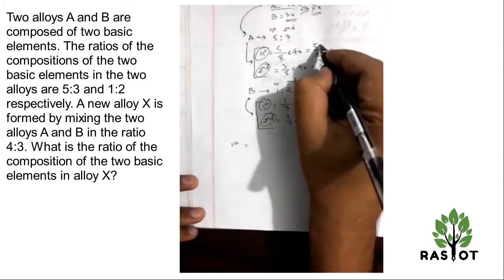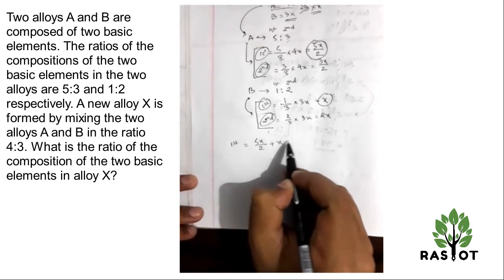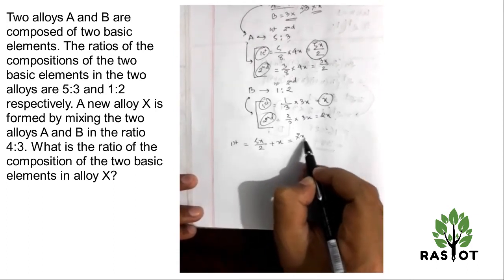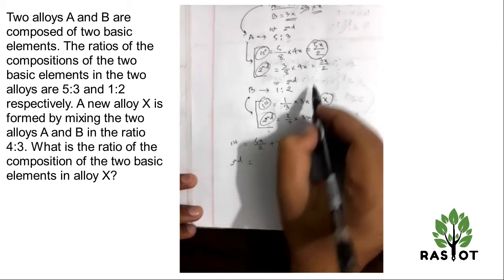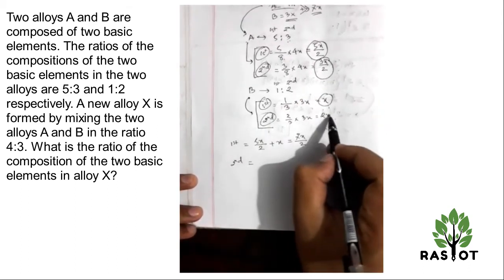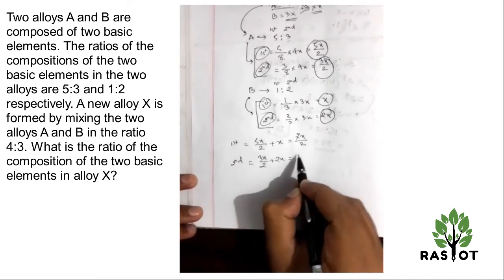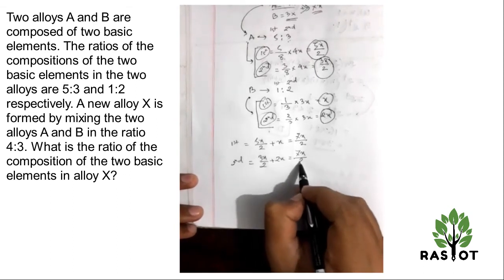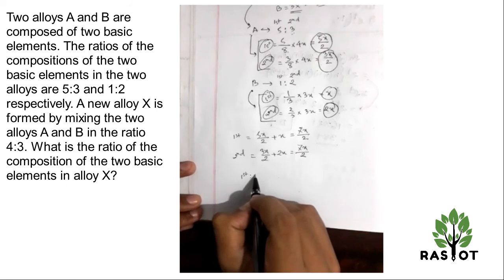So the first element total is 5X by 2 plus X, which gives me 7X by 2. The second element is 3X by 2 plus 2X, which also gives me 7X divided by 2. Now if we take the ratio, first element is to second element.